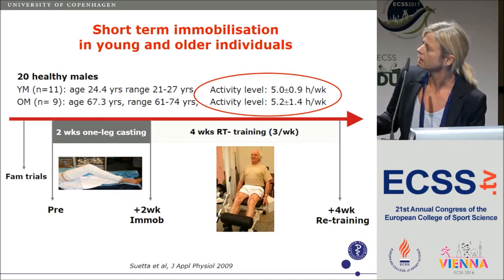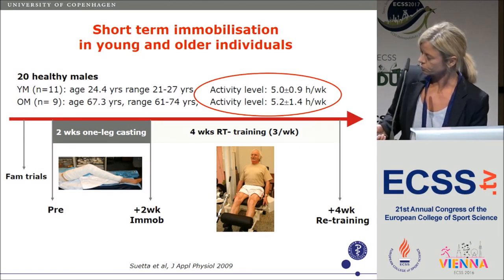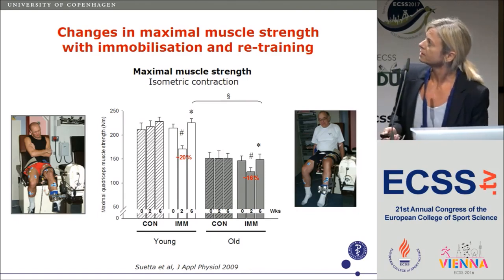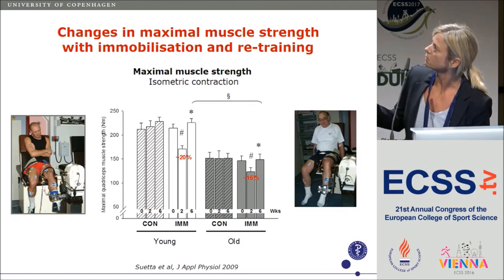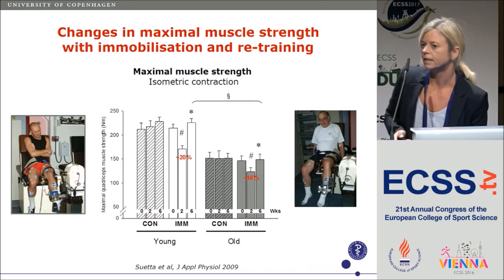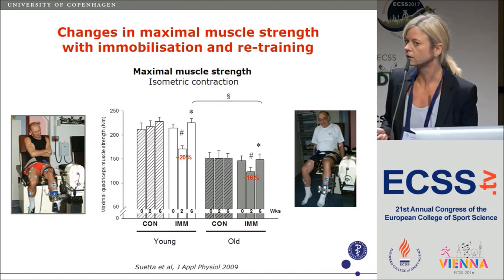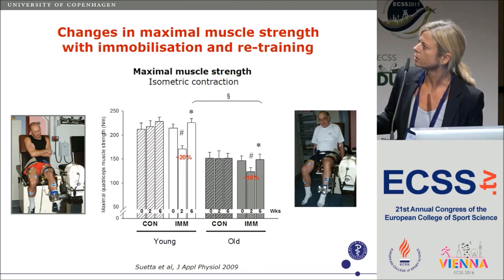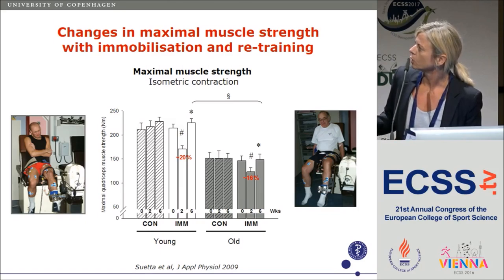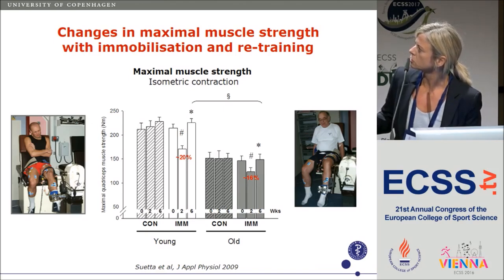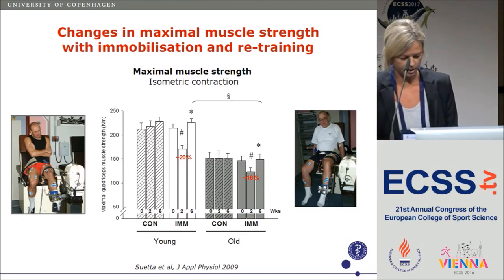They were subjected to two weeks of one-leg casting and four weeks of resistance exercise three times per week afterwards. When we looked at maximal muscle strength, we could see that although they were equal in activity level at inclusion, the older ones were markedly weaker before the immobilization. Both young and older individuals actually lost quite a lot of muscle strength due to immobilization, but regained it with four weeks of resistance exercise.